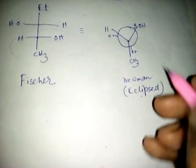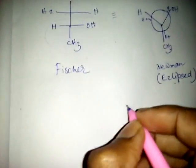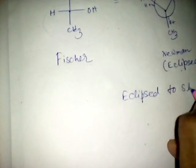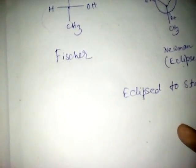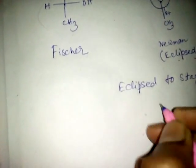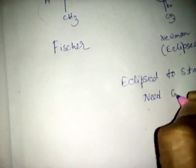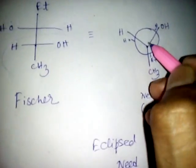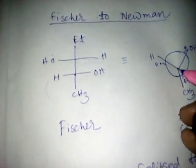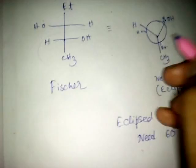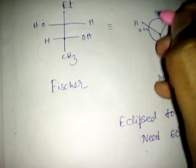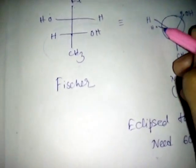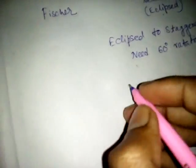To convert ellipse to staggered, we rotate the back side carbon 60 degrees. So if we move it 60 degrees, the substituent goes here, H goes here, and OH goes here — something like this.